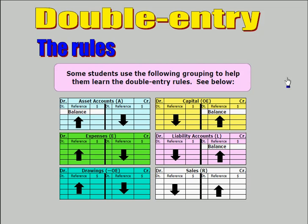Asset accounts, shown in light blue in this example. The double entry rule is that opening balances are on the debit side, and increases in asset accounts are also recorded on the debit side.